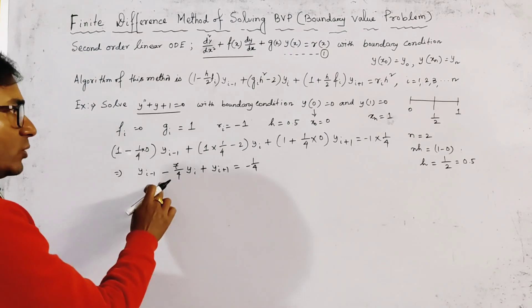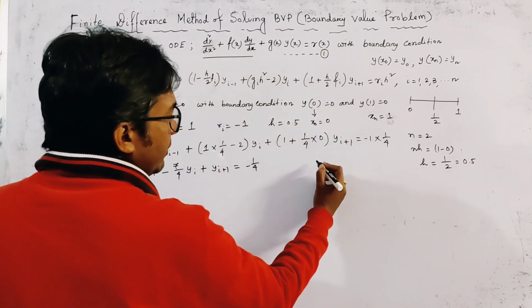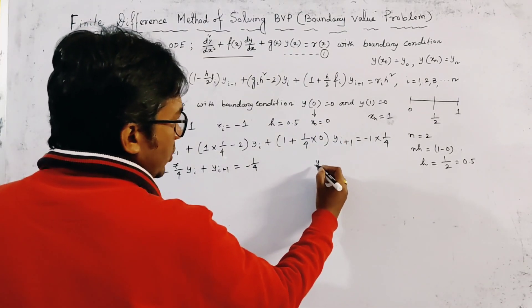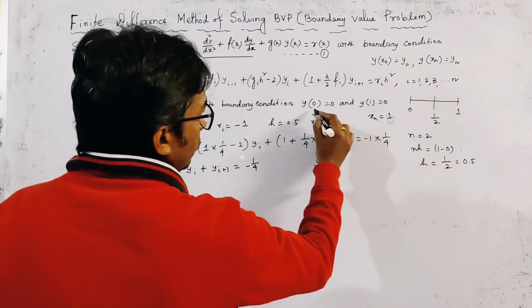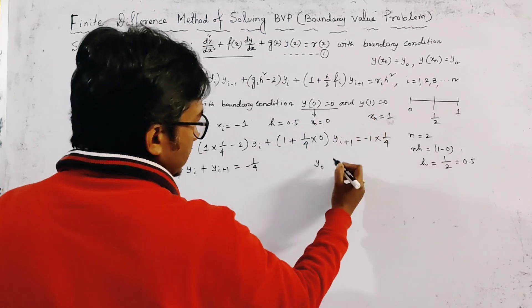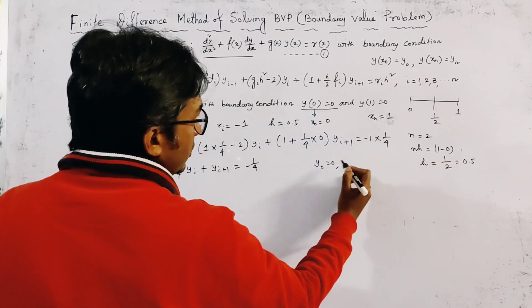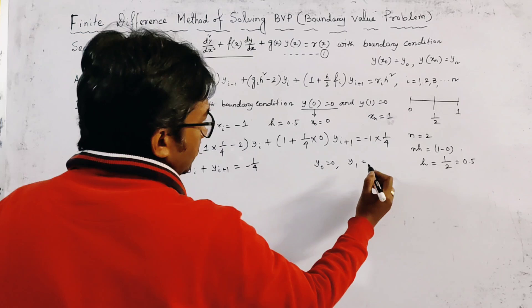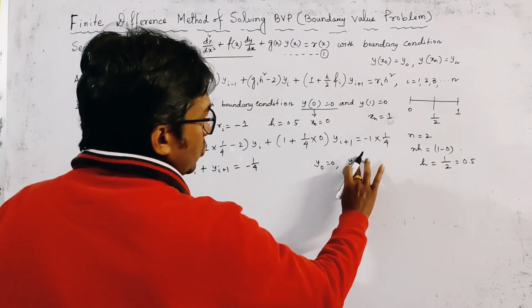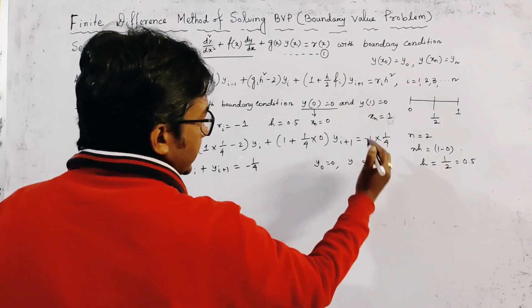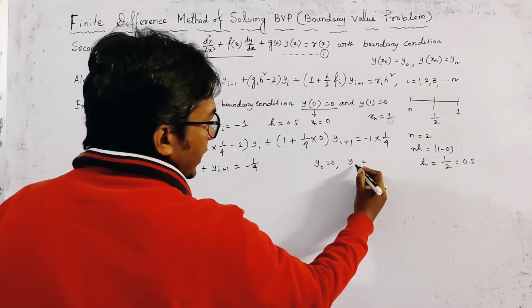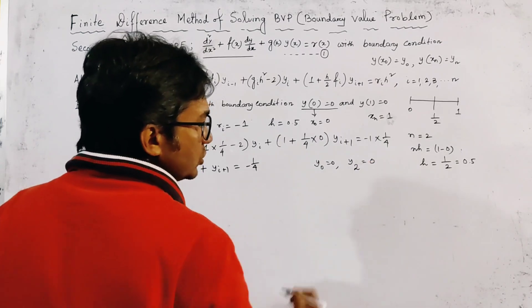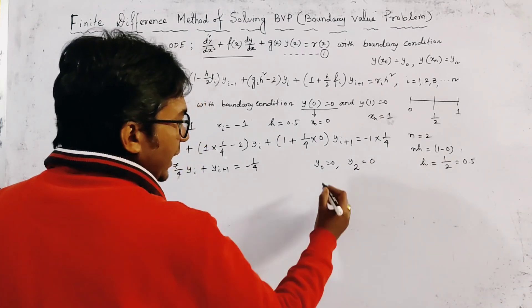Now we apply the two boundary values. The initial value is y₀ = 0, and the final value is y₂ = 0. We need to find the interior approximation y₁.